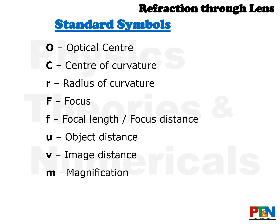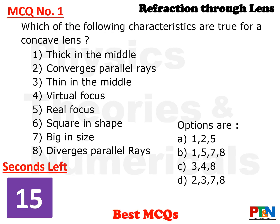Here we will be using the standard symbols: capital O for optical center, capital C for center of curvature, small r for radius of curvature, capital F for focus, small f for focal length, U, V and M for object distance, image distance and magnification respectively. Here comes the first MCQ.